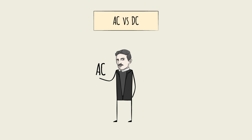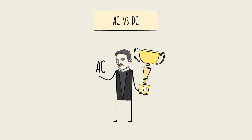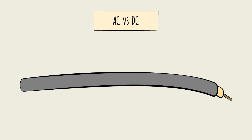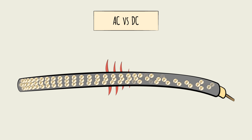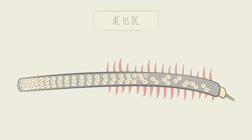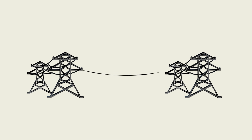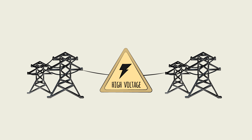Spoiler alert: Tesla won the argument, and it ultimately came down to AC being the cheapest option at the time for transmitting electricity. Transmitting electricity always involves some loss because, as electricity flows through the wires, some of it dissipates as heat. But losses can be minimized by transmitting high-voltage electricity over long distances.